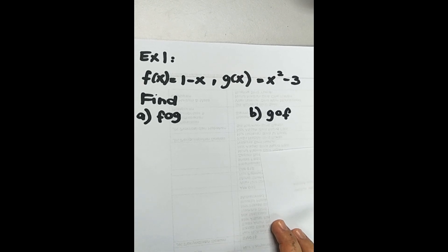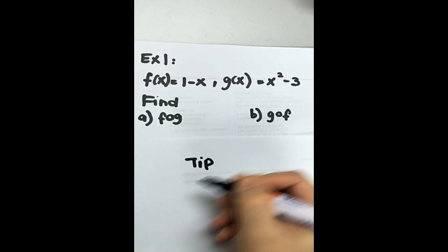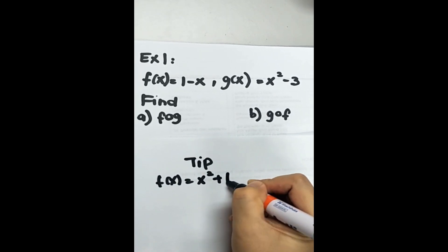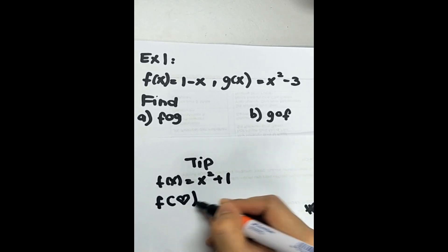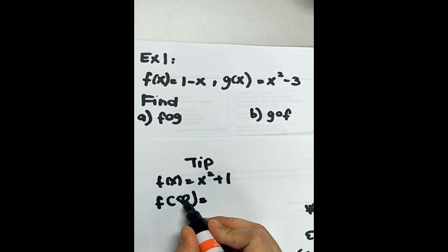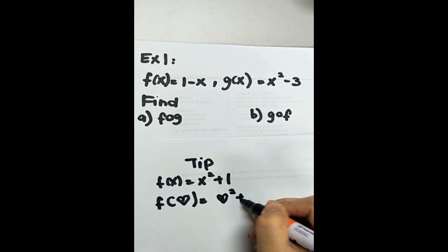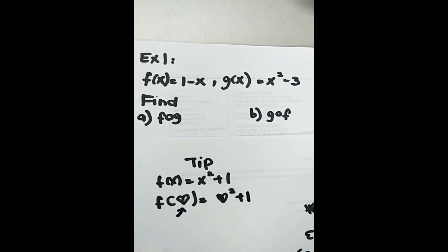We have to find f composite g and g composite f. Before we proceed to question A, let me give you a tip. For example, you have f(x) = x squared plus 1 and the question is you have to find f(love). It means you have to substitute 'love' into the function of f, so you get love squared plus 1. That is the concept of composite function — you substitute into the function of f.